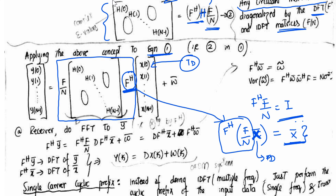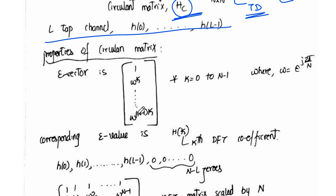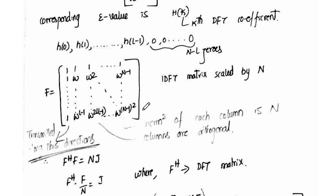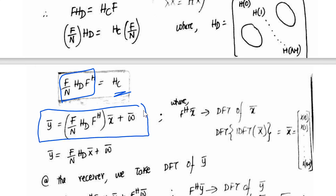So let's see these equations step by step. We have Y(0) through Y(N−1) in the time domain. The channel matrix is the circulant matrix with cyclic prefix. Considering the property of the circulant matrix, we can write HC as the diagonalized form. Substituting into the equation: Ȳ = F·(1/N)·H_D·F·x. We should have only the diagonal matrix to eliminate ISI and see the equations as flat fading equations.